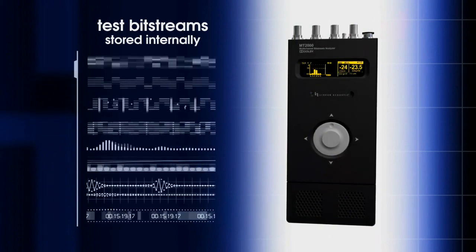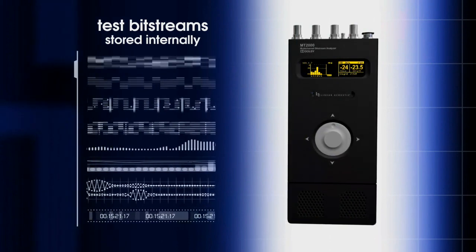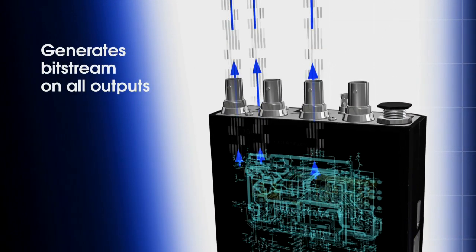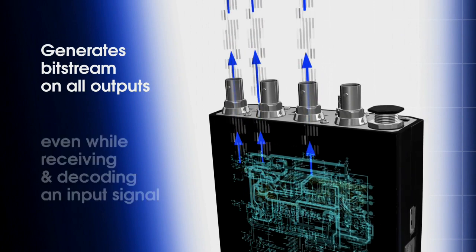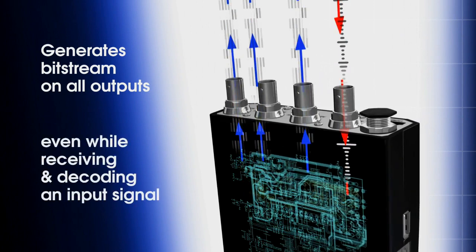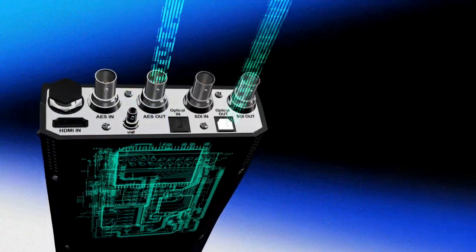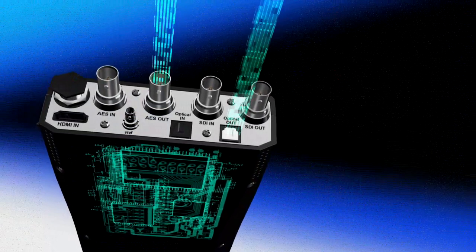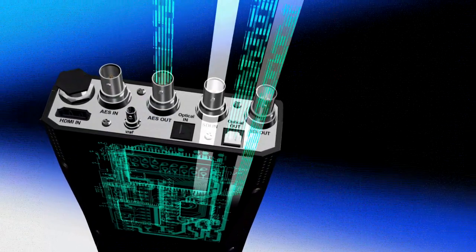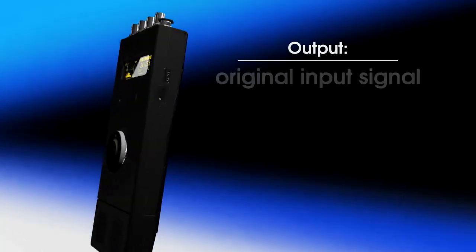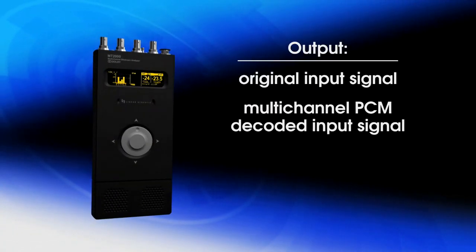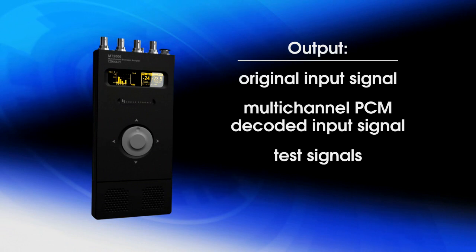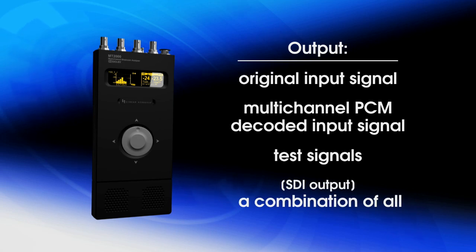An extensive set of useful Dolby Digital, Dolby Digital Plus, and Dolby E test bitstreams is stored internally in the MT2000. It can generate the selected bitstream simultaneously on all output connectors, even while receiving and decoding an input signal. Signals are provided simultaneously via the AES and Toslink optical outputs and can be re-embedded into any of the SDI pairs. Output can be the original input signal, a multi-channel PCM decoded version of the input signal, test signals, or, in the case of the SDI output, a combination of all of these.